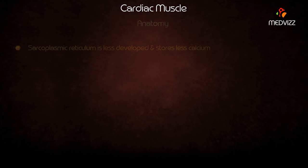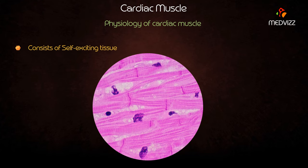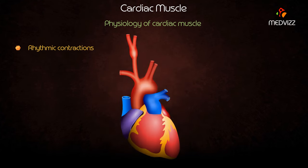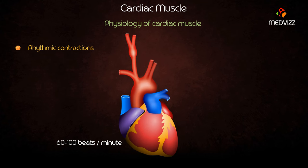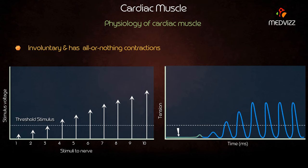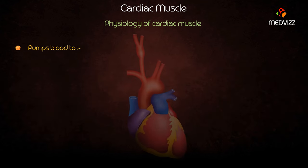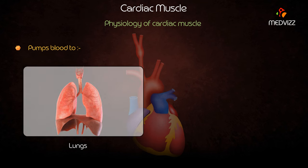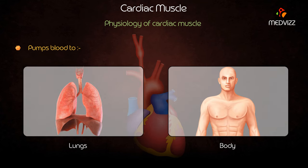Physiology of the cardiac muscle: it consists of self-exciting tissue with rhythmic contractions of 60 to 100 beats per minute. It is involuntary and has all-or-nothing contractions. It pumps blood to the lungs for oxygenation and to the body for distribution of oxygen and nutrients.